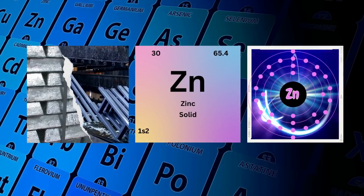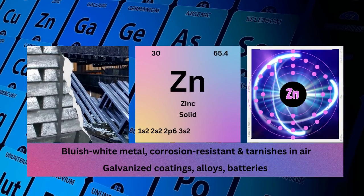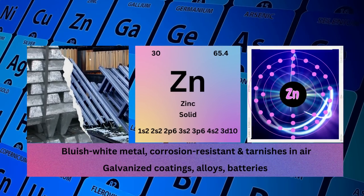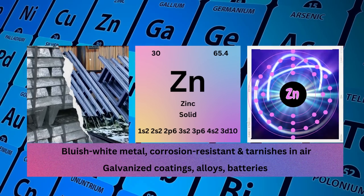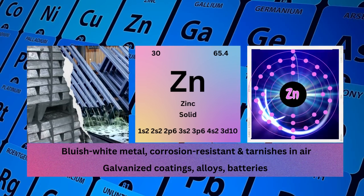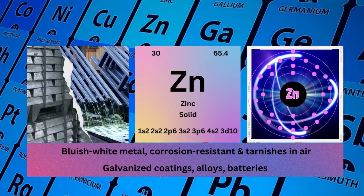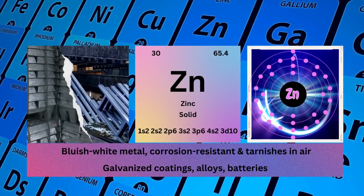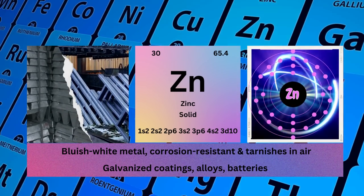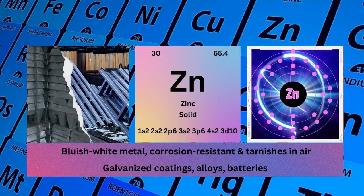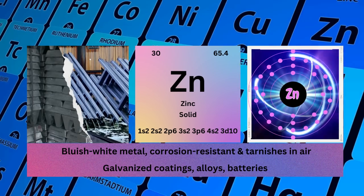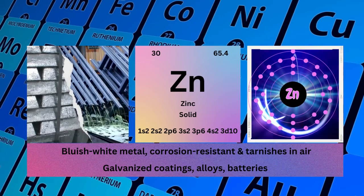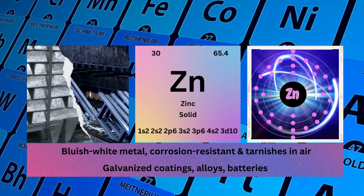Zinc. Atomic No. 30. Mass No. 65. Symbol Zn. State Solid. Electronic Configuration 1S2 2S2 2P6 3S2 3P6 4S2 3D10. Physical Properties: Bluish-White Metal, Corrosion Resistant and Tarnishes in Air. Zinc is used for galvanized coatings, alloys, and batteries.